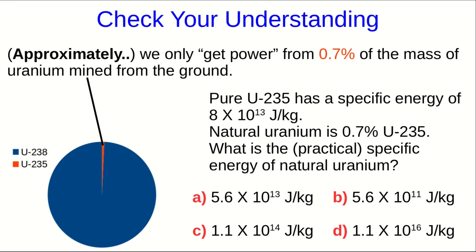At the end of the last lecture, I asked you about the specific energy of natural uranium using these facts, and hopefully you realized that you just have to take that 8 times 10 to the 13 figure and multiply it by 0.7%, or in other words, by 0.007, and that gave you this figure of order 10 to the 11 joules per kilogram.